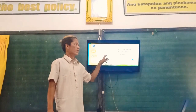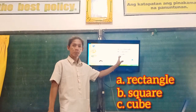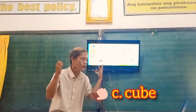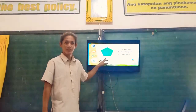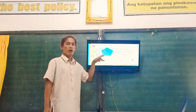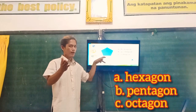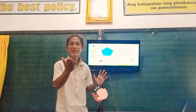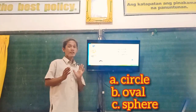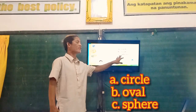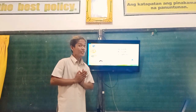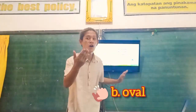Is it rectangle, square, or cube? Yes! This is cube. How about this one? What is the name of this figure? Letter B. And how about this one? Is it A. Cylinder, B. Oval, or C. Sphere? The correct answer is Letter B — Oval.